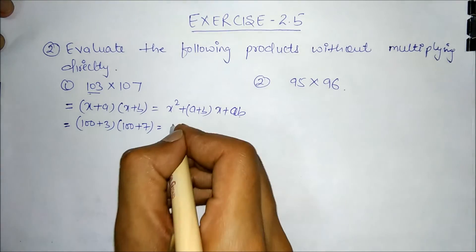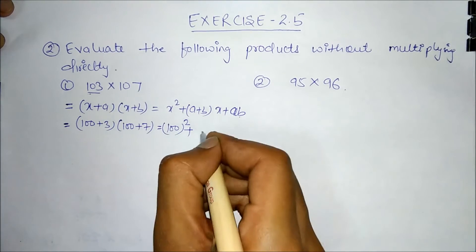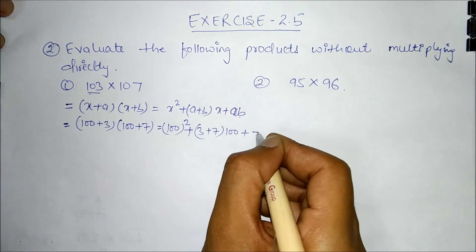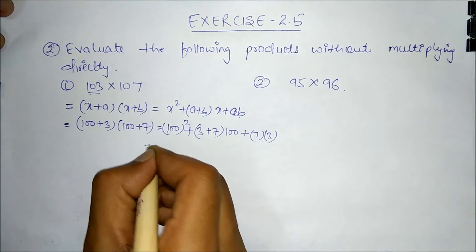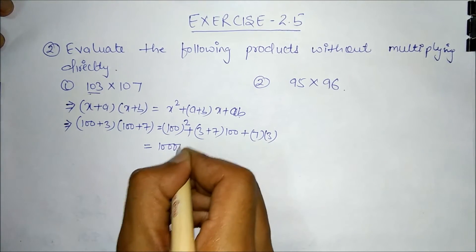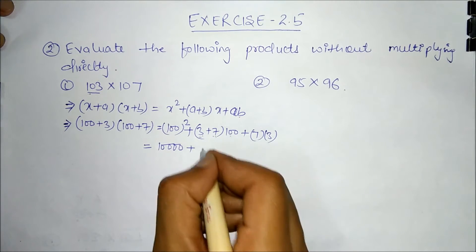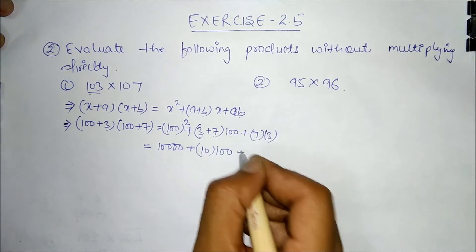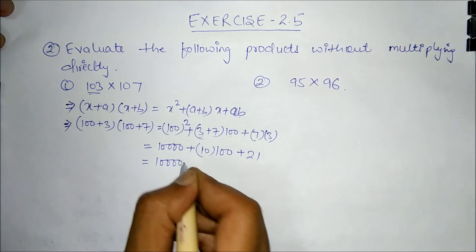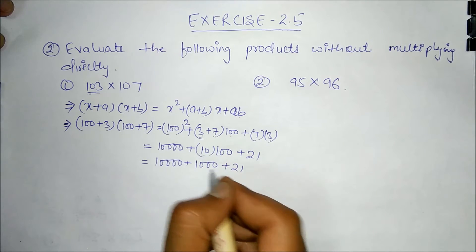Here x = 100, a = 3, and b = 7. So this becomes 100² + (3 + 7) × 100 + 7 × 3, which is 10000 + 1000 + 21 = 11021. So this should be the answer for this particular question.